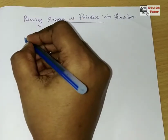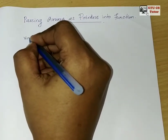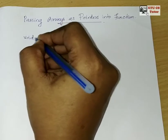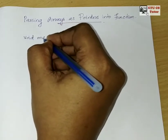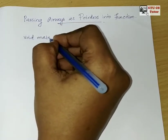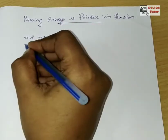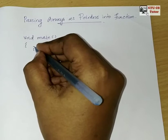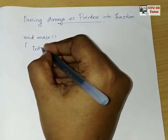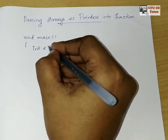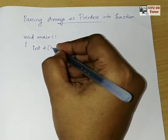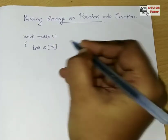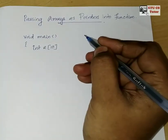So I will start with the main function. Inside main, I will declare the array: 'a' of 10.